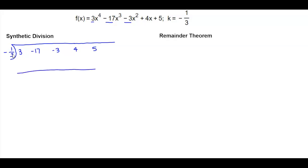The first thing we do is bring down the 3. Then we take negative one-third and multiply it by 3, which gives us negative 3 over 3, equal to negative 1. So negative 17 minus 1 gives us negative 18.